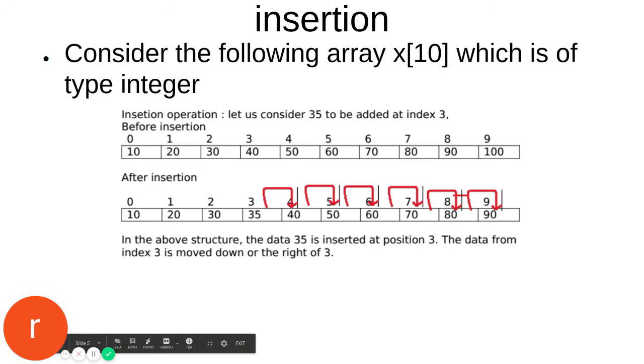Now consider insertion at a particular place. In the given example, this is the array x[10], which ranges from 0 to 9, with values stored inside. We are going to insert the element 35 at index 3. Now how can it be done? We have to move the element 40 to the next location, and 50 to the next, and so on.